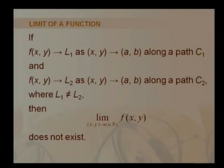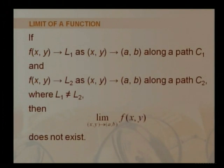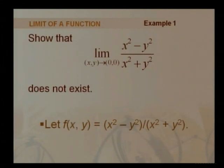If f(x,y) approaches L1 as (x,y) approaches (a,b) along path C1, and approaches L2 along a different path C2, and if L1 is not equal to L2, then we say the limit of f(x,y) as (x,y) approaches (a,b) does not exist.